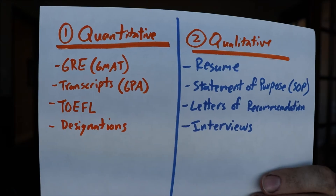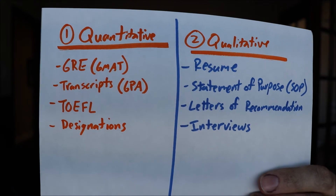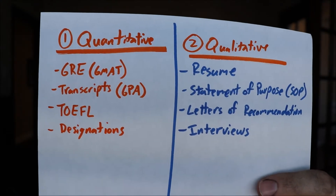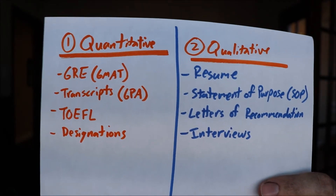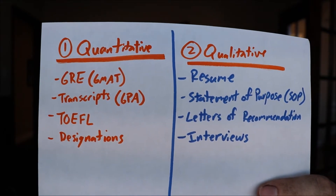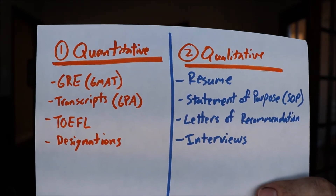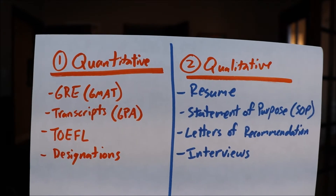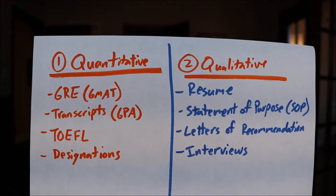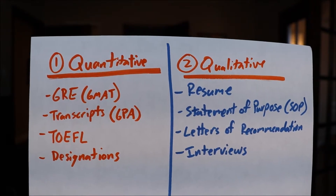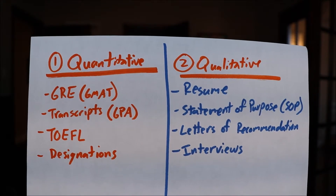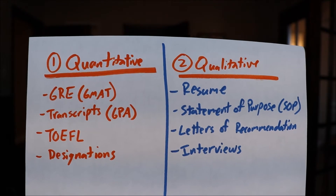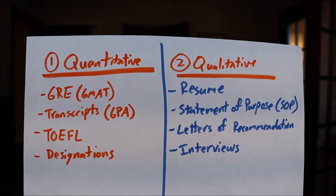I believe there are two areas of the application: the quantitative side and the qualitative side. As you can see here, there are four different areas in the quantitative and four in the qualitative. The quantitative covers GREs, the GMAT depending which exam you take, transcripts and GPA and the school you went to, your TOEFL, and any designations. The qualitative side will be your resume, your statement of purpose, letters of recommendation, and the interviews.